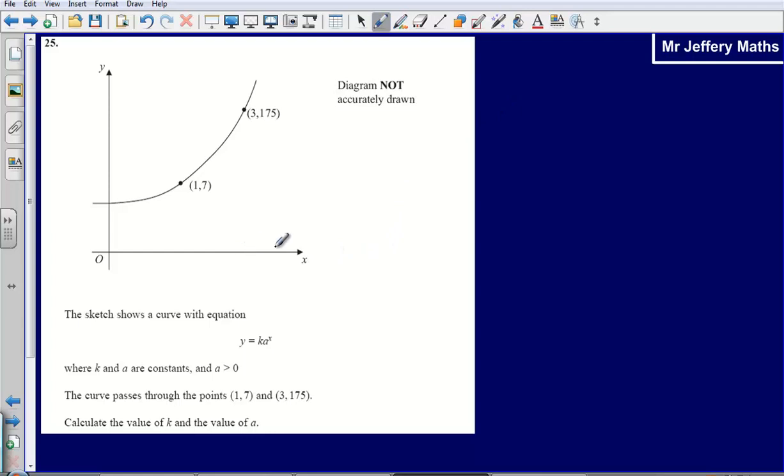So the first thing that we're going to do, and this is a really nice question actually, is simply input the coordinates into our equation. So we know our value for y and we know our value for x at this point here, so we can say that y is 175 when x is equal to 3. So 175 equals ka to the power of 3, just substituting into the equation.